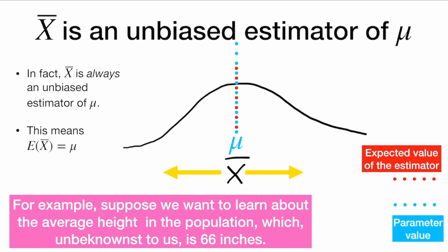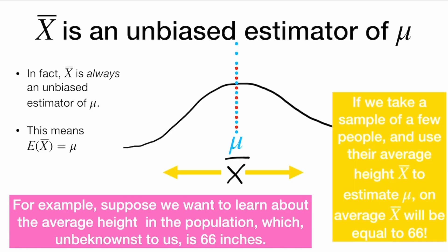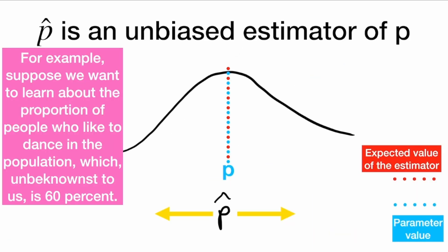For example, suppose we want to learn about the average height in the population, which, unbeknownst to us, is 66 inches. Then if we take a sample of a few people and use their average height x-bar to estimate mu, on average x-bar will be equal to 66. That doesn't mean it's always going to be 66 — it's random, it has a distribution, which we can see here. But on average, it will be correct.